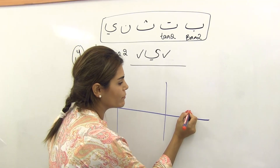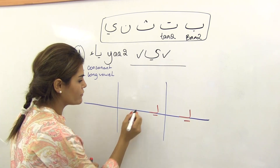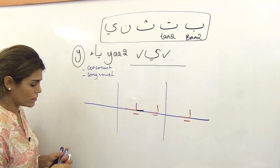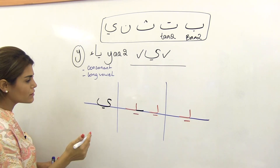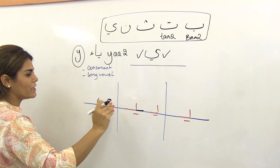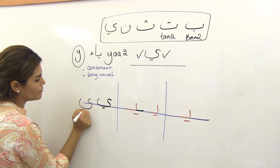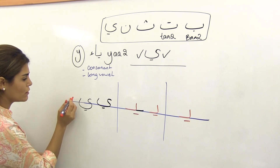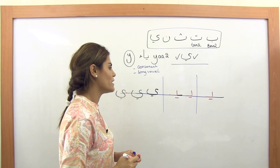Ya as a consonant sounds like 'Y' — as in 'yes,' 'you,' 'y'all.' It looks like Ba, Ta, and Tha with the line below. At the beginning: same base form with the line below. In the middle: same form, and if it connects you draw the connection. At the end it returns to the original form — the head on top and the body below the line — like an S with a tail. If connected, draw the connection line first.